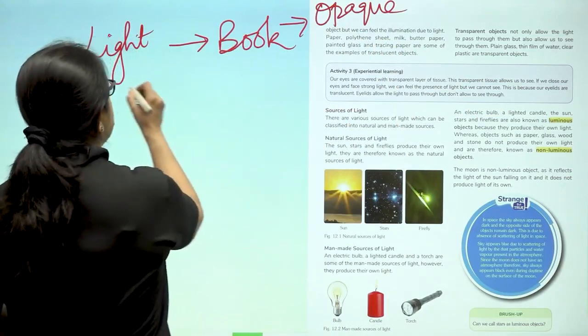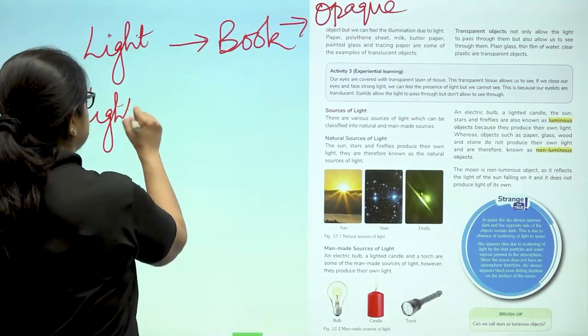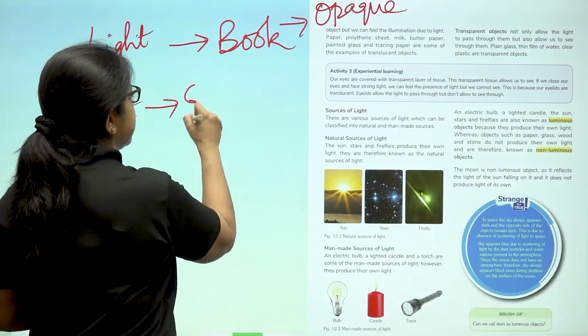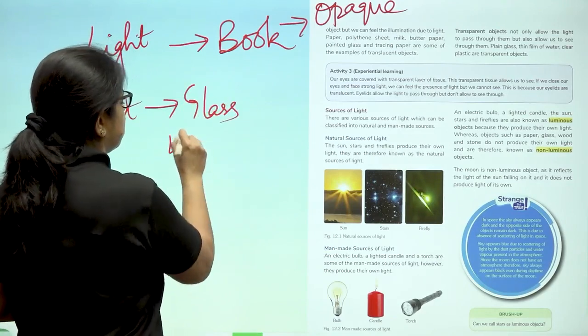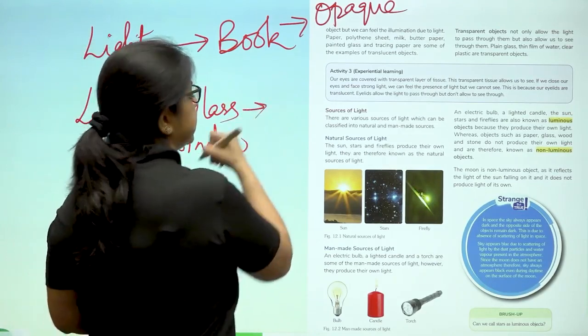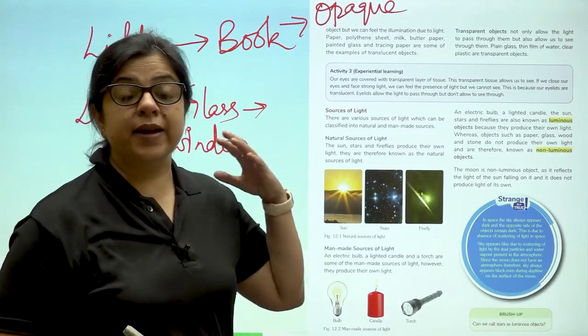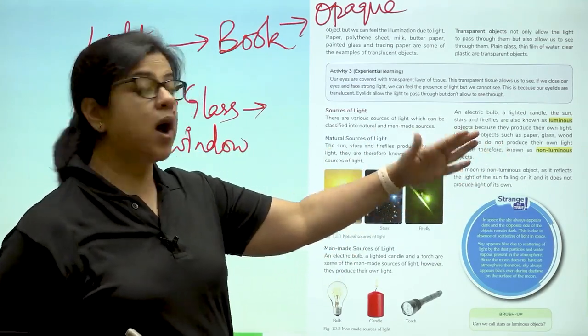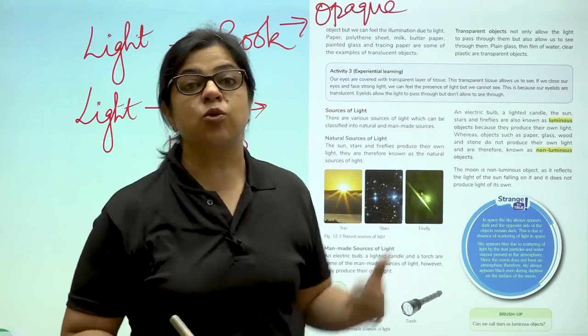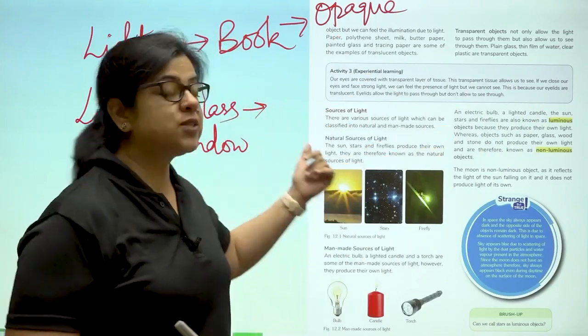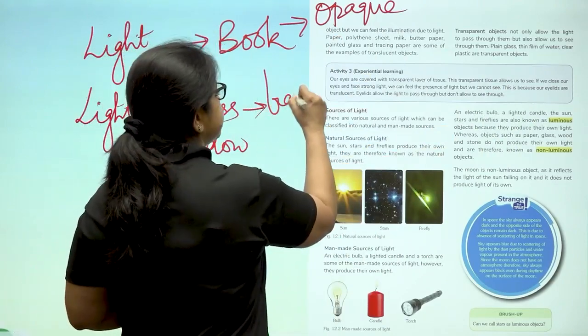If I pass light through a glass window, what will happen? Light will pass through it. When light passes through the glass window, I can see exactly what is outside the window. So a glass window is transparent.